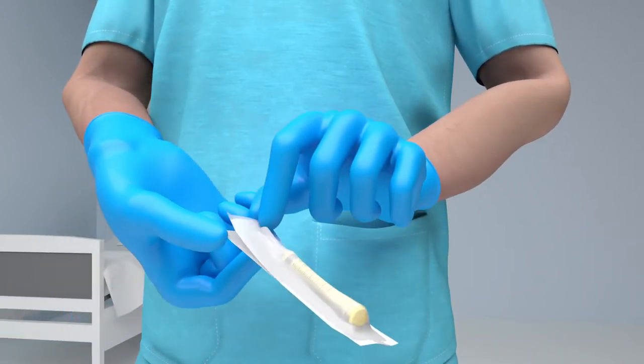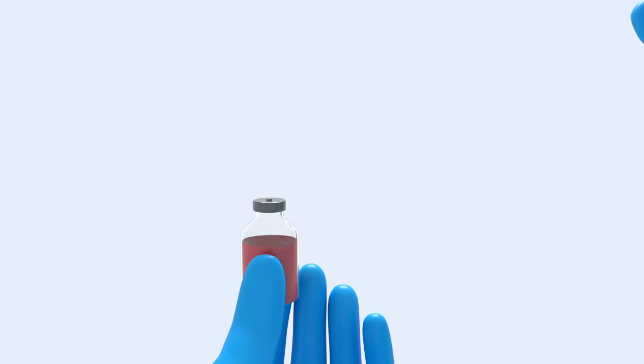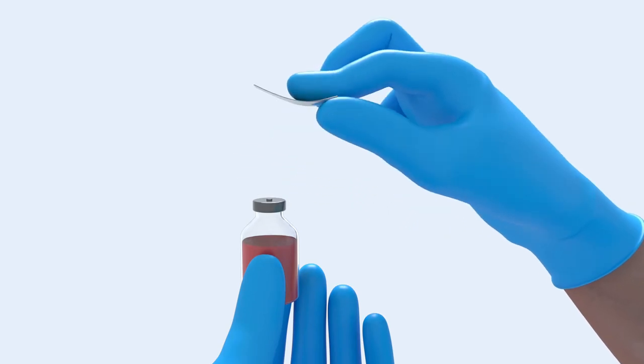Remove the syringe by peeling open the sterile blister pack. Remove the protective cap from your medication vial and cleanse the top.